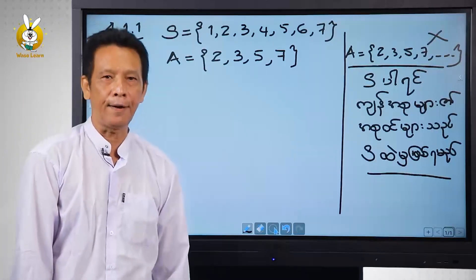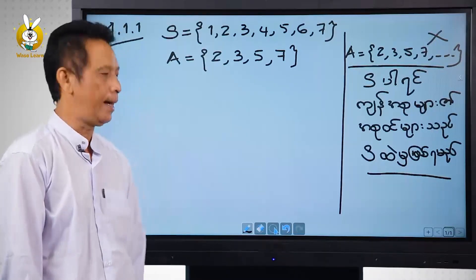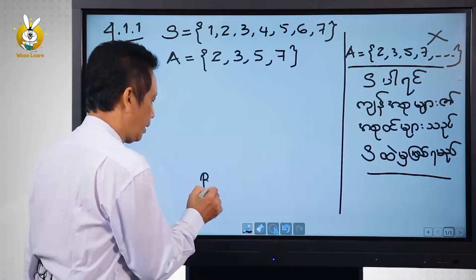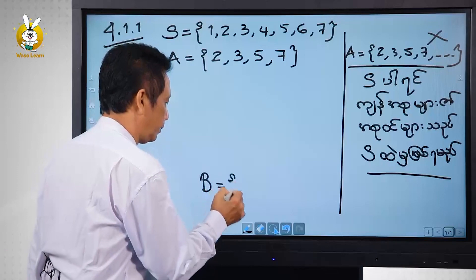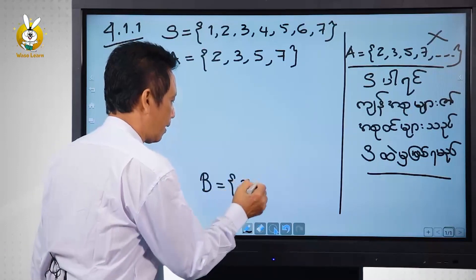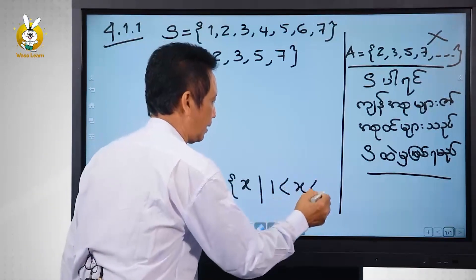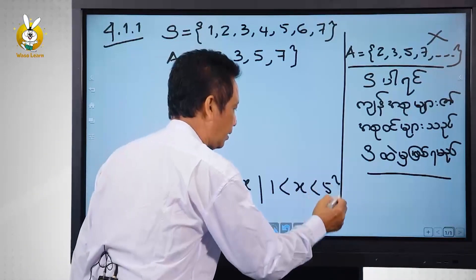Let's look at the set: B equal to the set of A such that 1 less than A less than 5.